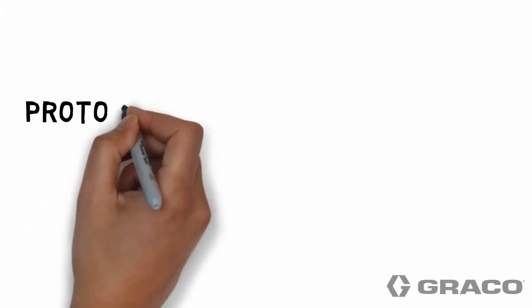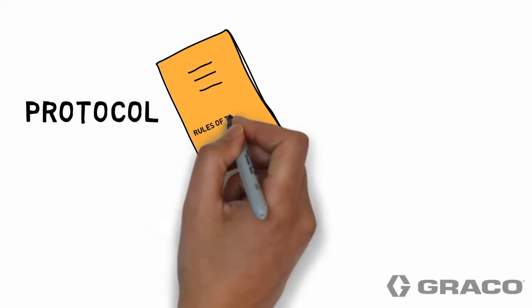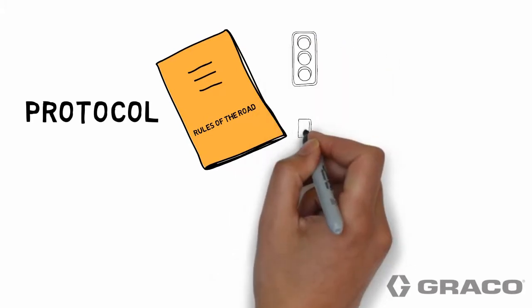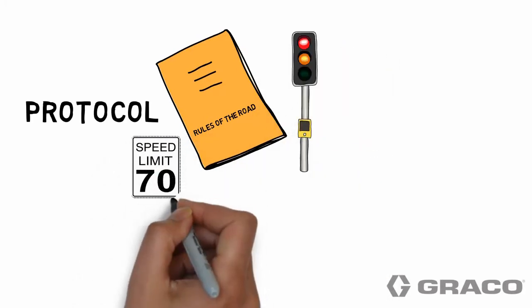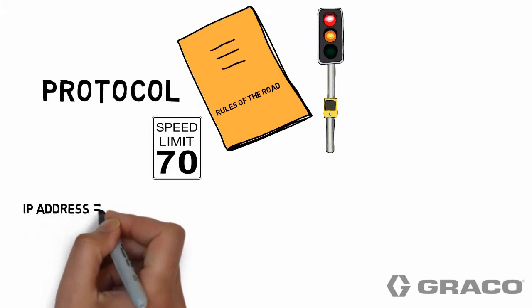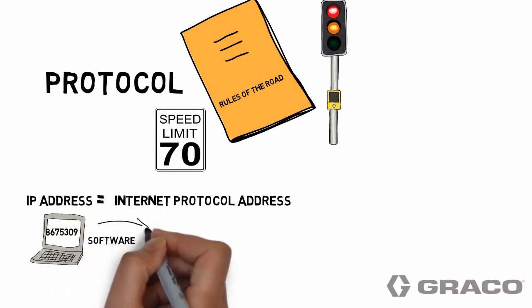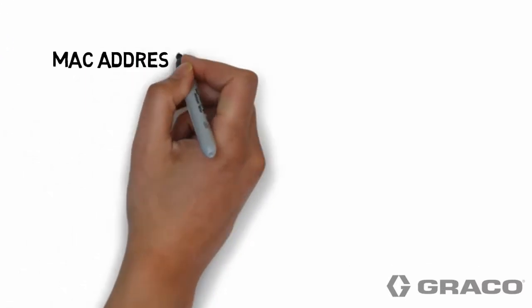So what's a protocol? A protocol is defined as a system of rules that explains the correct conduct and procedures to be followed, like the traffic rules we follow most days. In this case, it would be a network's procedures and configurations followed to communicate.